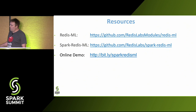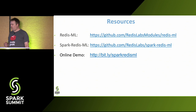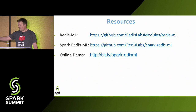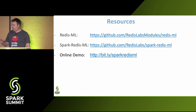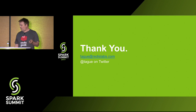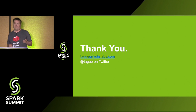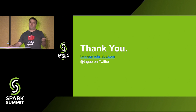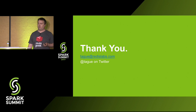Where would you find this code? The Redis ML module you would find at the Redis ML GitHub repository. The Spark module you can find at its respective repository. And there's actually an online demo. That's all I had for you today. Are there any questions from the audience?